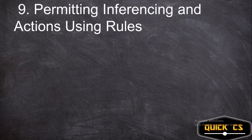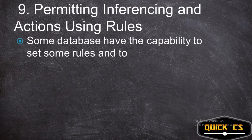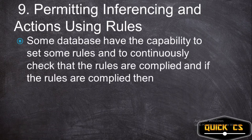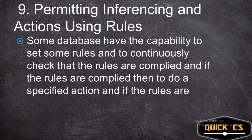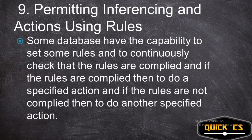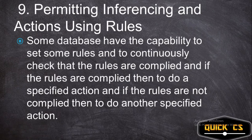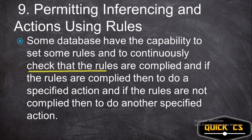The final advantage is permitting inferencing and actions using rules. Some databases have the capability to set rules, continuously check that those rules are complied with, and then perform a specific action based on whether the rules are met or not. For example, a rule checks student attendance: if attendance is above 75%, the student gets bonus marks; if it falls below 75%, the student's parents are sent a warning email. The DBMS checks these rules after every update and takes action accordingly.